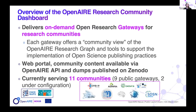This service delivers on-demand open research gateways for research communities. Each gateway is a community-specific slice of the OpenAIRE Research Graph. In addition to the discovery portal, the gateway also includes tools to support the implementation of open science publishing practices for specific research communities. The community content is also available via the OpenAIRE API and dumps are published on Zenodo.